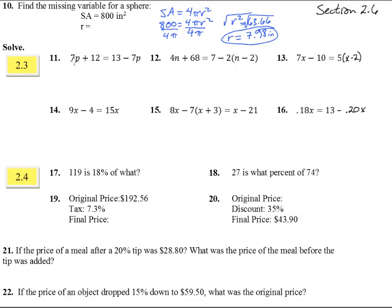Number 11. 7p plus 12 equals 13 minus 7p. We've got to get these two p's together, so I'm going to add 7p to both sides. And we get 14p plus 12 equals 13. Subtract 12 from both sides, we get 14p equals 1. And divide both sides by 14, 1 over 14.